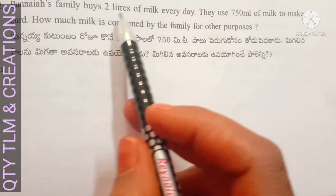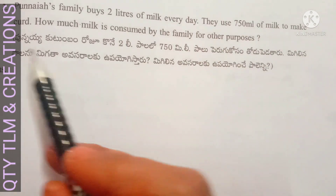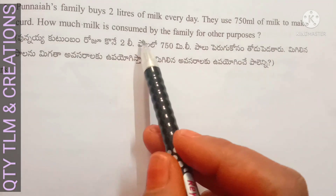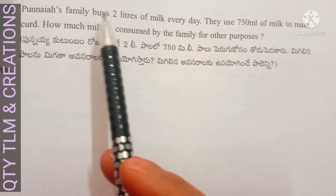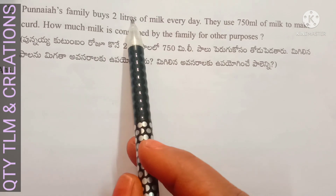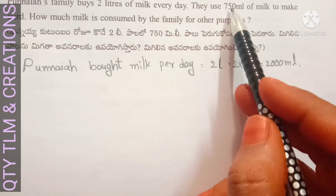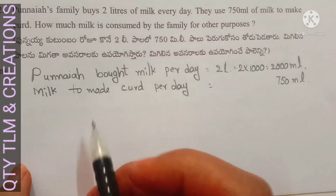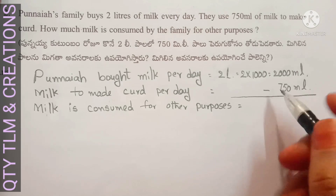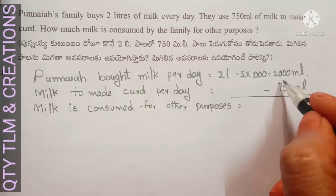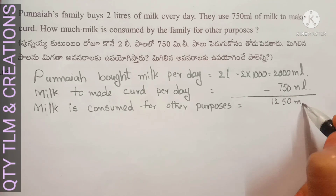Next question: Purnaya's family buys two liters of milk every day. They use 750 milliliters of milk to make curd. How much milk is consumed by the family for other purposes? Purnaya bought milk per day equals two liters, that is 2000 milliliters. Milk to make curd equals 750 milliliters. Milk consumed for other purposes equals 2000 minus 750, which gives 1250 milliliters.